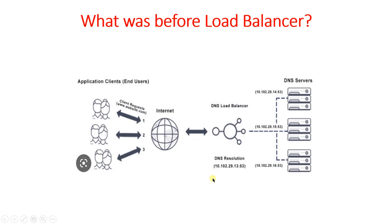As you can see here, client requests are being sent and the DNS server is resolving the queries for the user. However, due to its limitations, we no longer use DNS as a load balancer. Most notably, DNS always returns the same set of IP addresses for a domain because it does not check for network or server errors or outages.